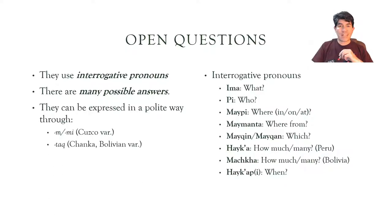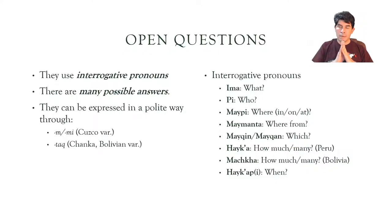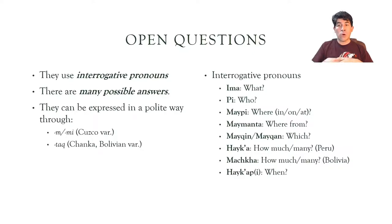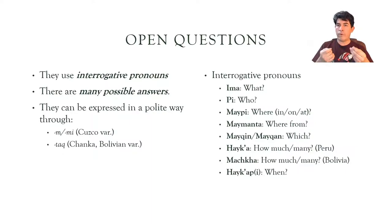However, the other varieties — both the Chanka variety and the Bolivian variety — make further use of 'tach' to soften the question. In our classes, we will prefer the form with 'tach': imatach, pitach, maipitach, maimantatach, maichantach, haicach, haicachach, haicapitach. Those are the interrogative pronouns in their softened form. Remember that if you use 'iman' in the Chanka region or in Bolivia, your question may be perceived as more forceful — as if you're demanding an answer. It's better to use the 'tach' forms in those regions.